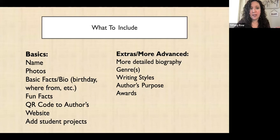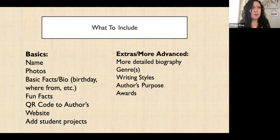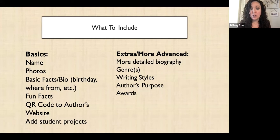For more advanced additions, you can include a more detailed biography and list the genre of books, writing styles, and author's purpose. There are five typical purposes: to inform, to entertain, to persuade — and a couple more I'm blanking on — but for upper grade levels where that is part of the standards, you could include that as well. And then any awards that the authors have won.